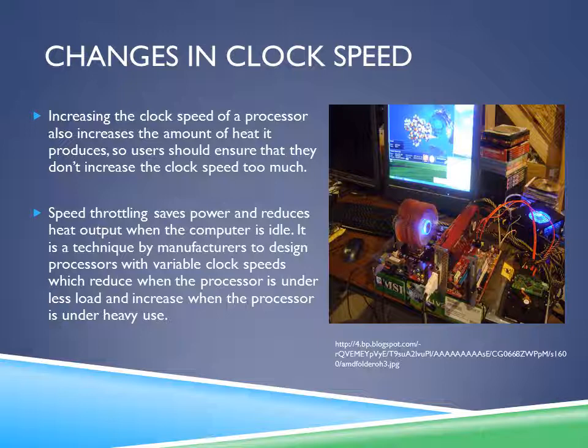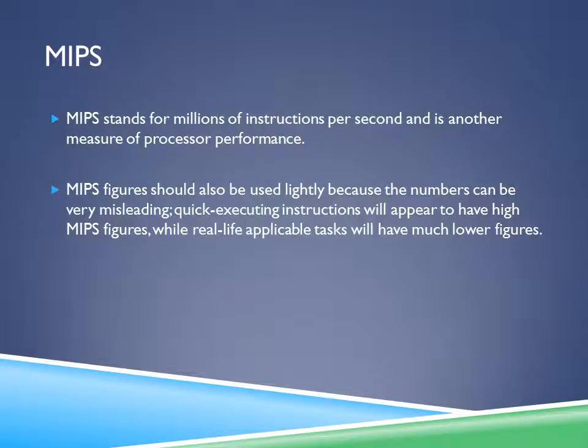Speed throttling saves power and reduces heat output when the computer is idle. It is a technique by manufacturers to design processors with variable clock speeds, which reduce when the processor is under less load and increase when the processor is under heavy use. MIPS stands for millions of instructions per second and is another measure of processor performance. MIPS figures should be used lightly because the numbers can be misleading — quickly executing instructions will appear to have very high MIPS figures, while real-life applicable tasks will have much lower figures.